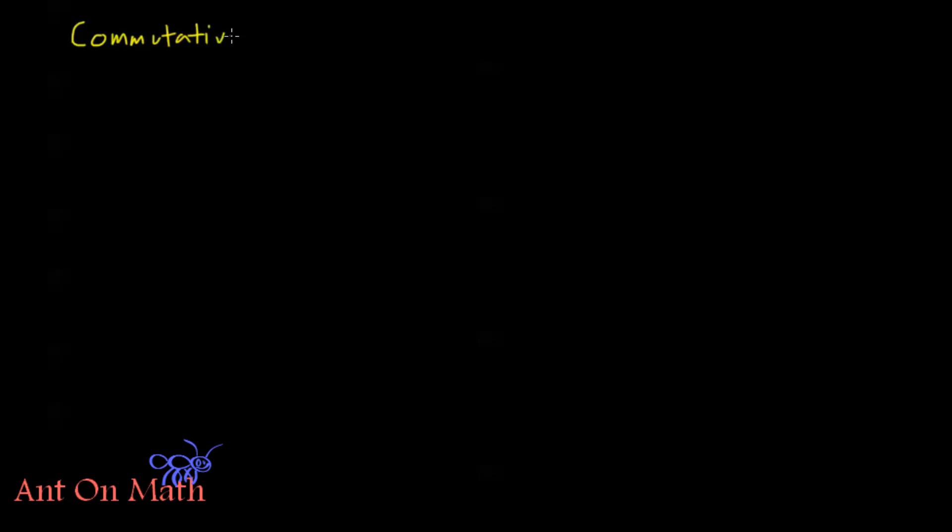So commutative - that means that elements can commute. Usually this means that in algebra, commutative means in multiplication, AB equals BA. It means they can commute, they can switch places with each other and they still have an equivalent meaning or an equivalent result.